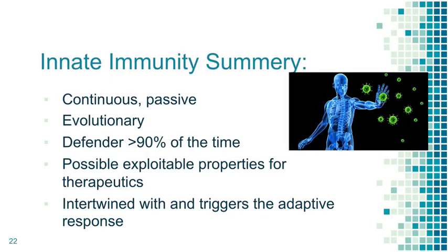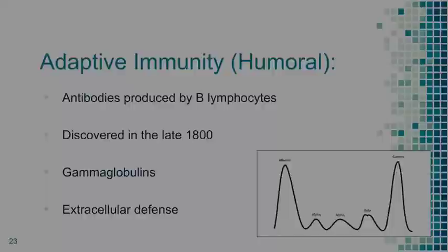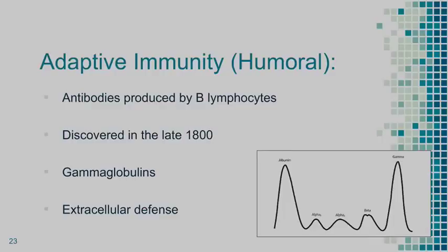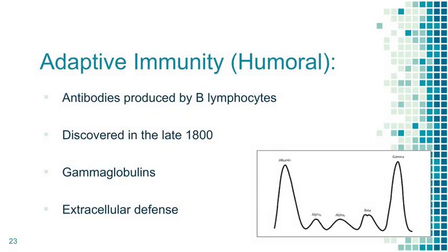Summary of the innate immune system: it's continuous and passive, evolutionary — we share toll-like receptors with all mammals. It defends more than 90%, sometimes 99%, of all infections. It has exploitable properties for therapeutics and is closely linked to the adaptive immune system. The adaptive immune system is divided into humoral immunity and cell-mediated cellular immunity.